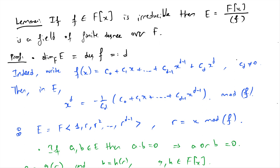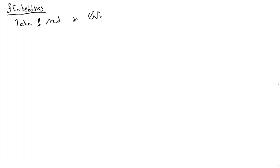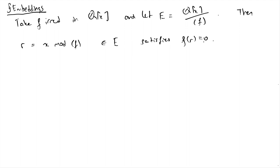So this quotient construction yields a field of finite degree — the index [E:F] equals exactly the degree of f, and every element is invertible. Now the question is: which root is r? F has d complex roots; which one is r supposed to be? We can be more formal: we can talk about polynomials with coefficients in E, and the statement is that r in E stands for any of the roots of f — it is able to represent any of them.